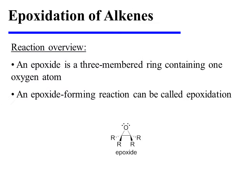An epoxide is a three-membered ring containing one oxygen atom. An epoxide-forming reaction can be called epoxidation. As we'll see in this video, epoxides can be formed from alkenes.